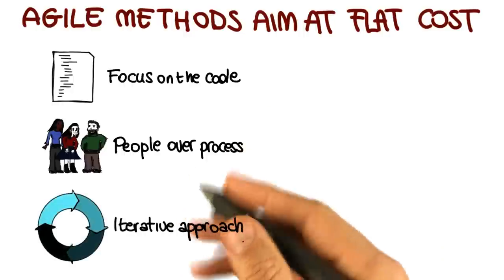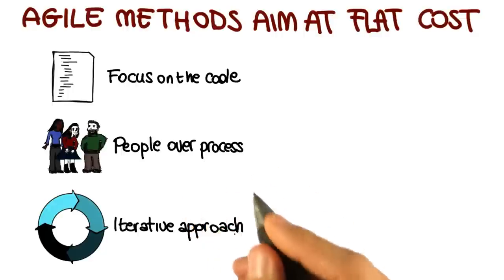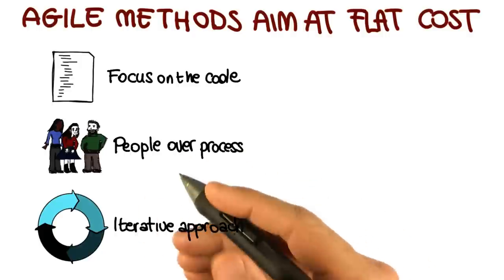In addition, agile methods are all based on iterative approaches to software development, to deliver working software quickly and to be able to evolve it just as quickly based on feedback. And feedback can come from many sources. In particular, it will come from the customer. It will be customer feedback.